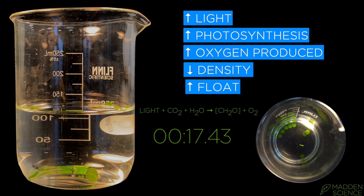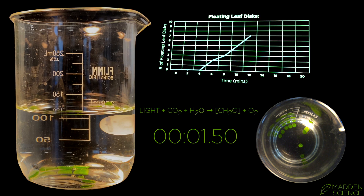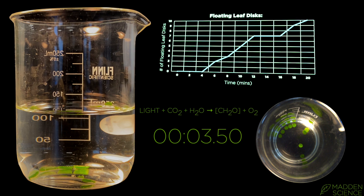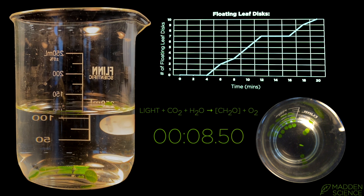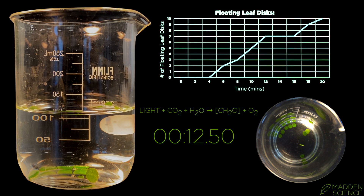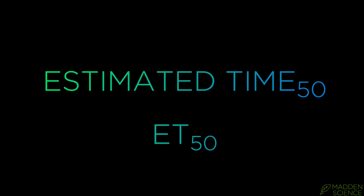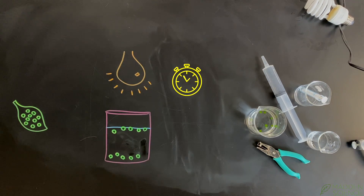More light equals more photosynthesis, which equals more oxygen produced, which equals less density, which equals more float. The analysis comes from charting how many discs float versus time — number of discs on the y-axis and time on the x-axis. A standard metric that can be used across experiments is the estimated time 50 (ET50): the time it takes for half the discs — in this case five out of ten — to be floating.